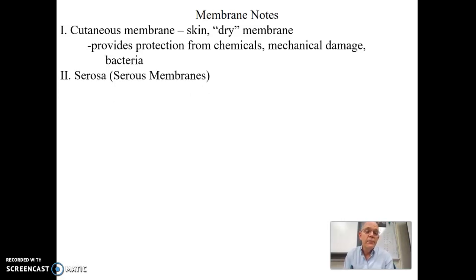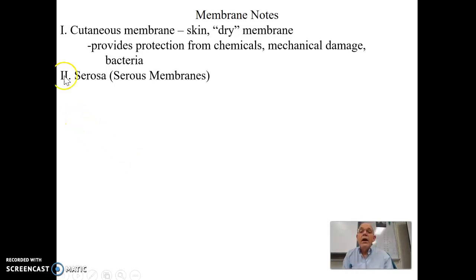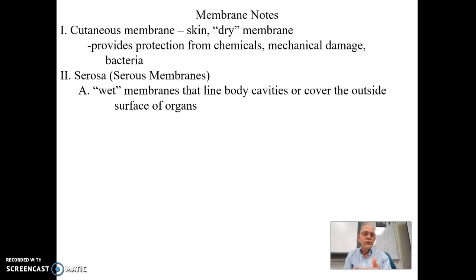The next set of membranes is called serosa, or serous membranes. These are wet membranes — always coated with moisture or fluid — that line the body cavities or cover the outer surface of organs.